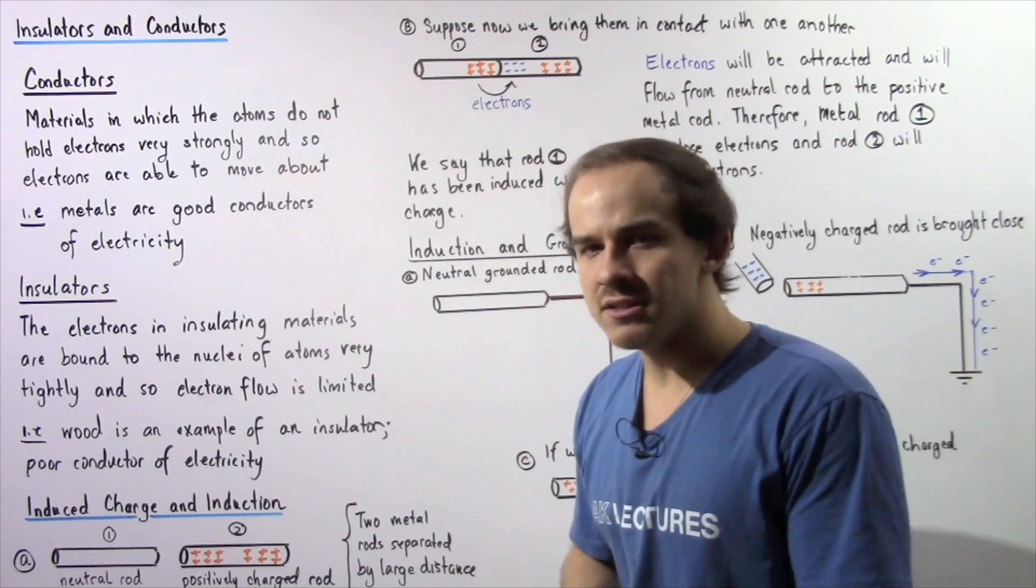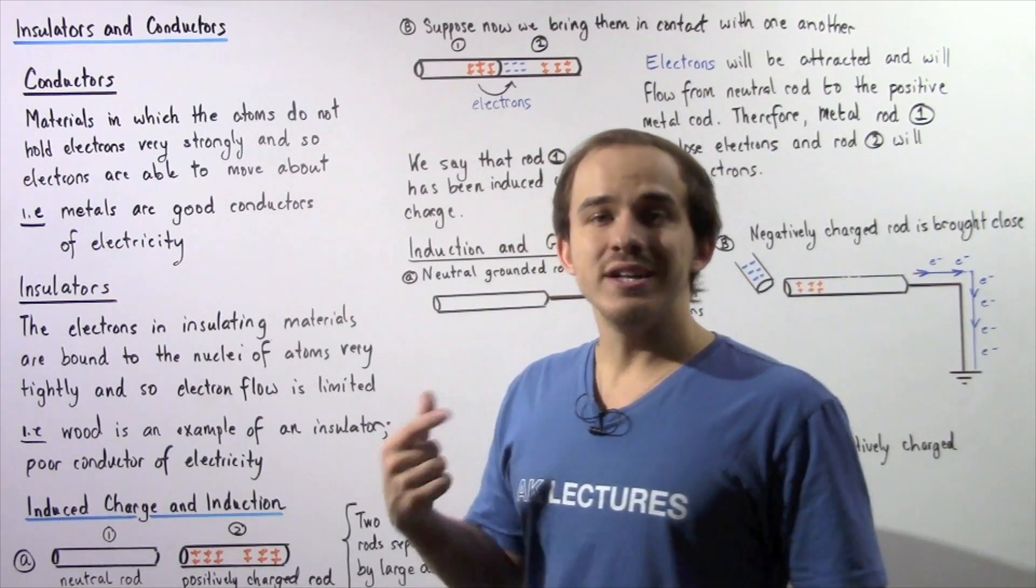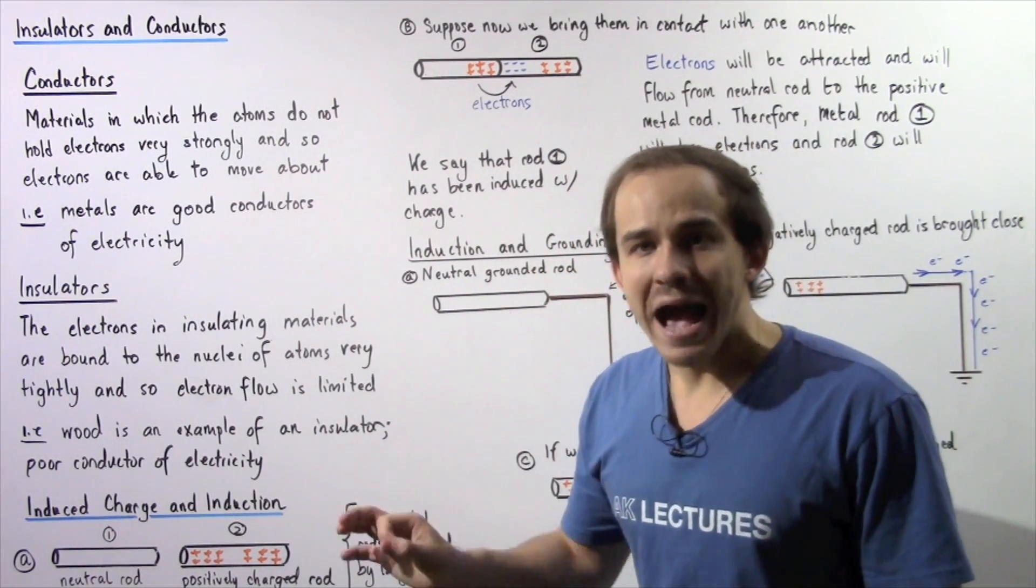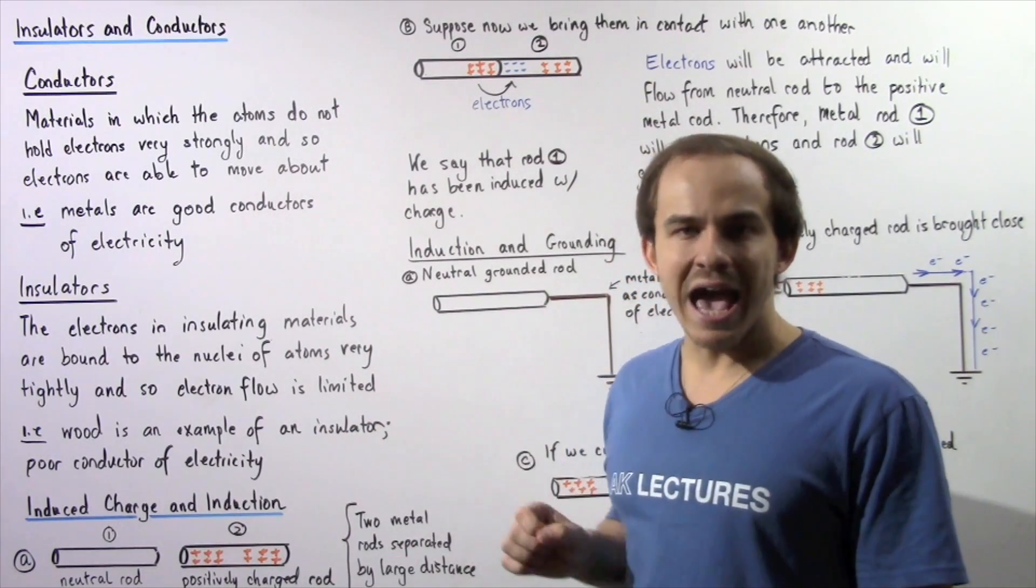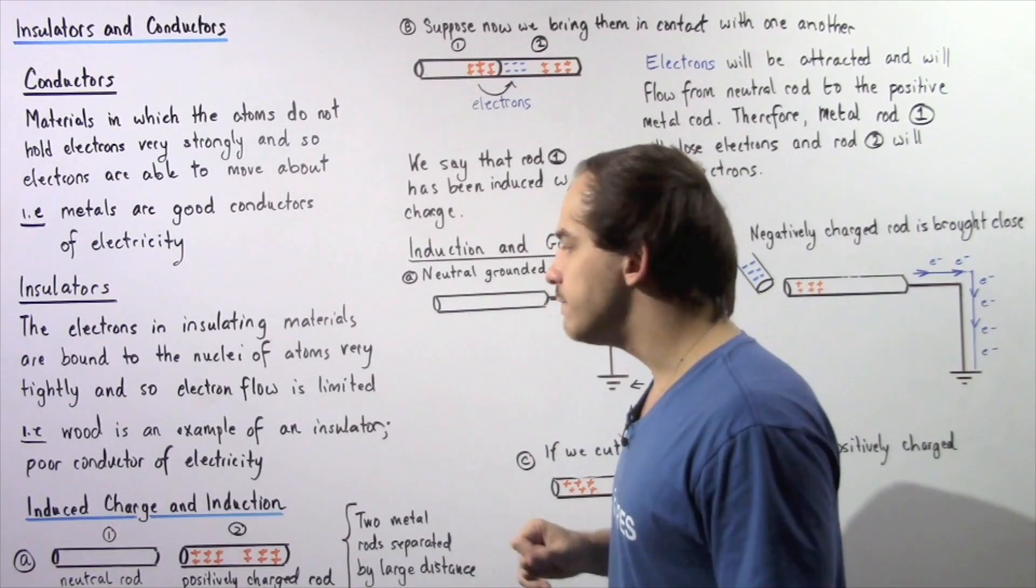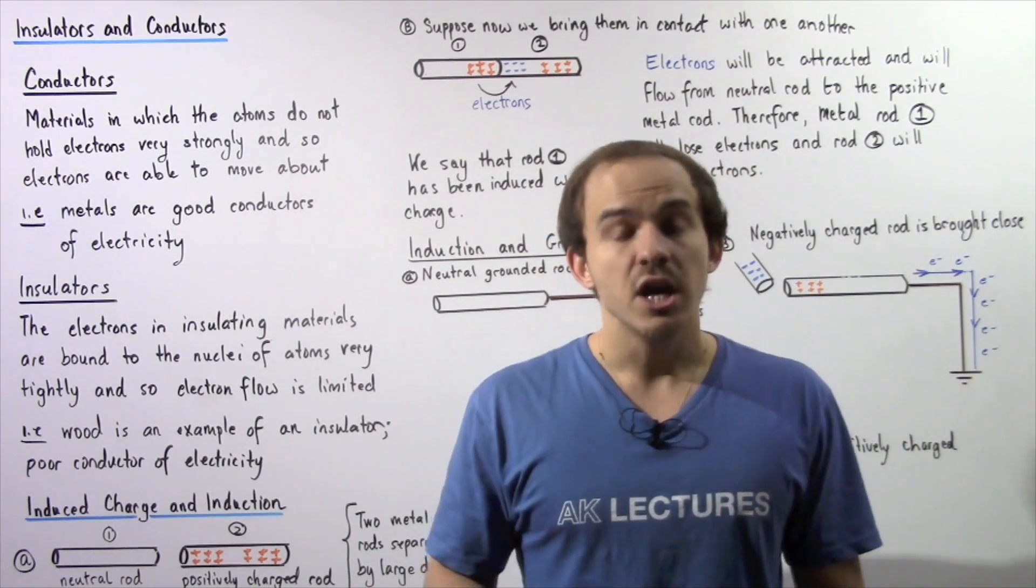Now an insulator is essentially the opposite. Inside an insulator, the electrons are bound to the nuclei of the atom very strongly, and so that means electron flow is very limited.